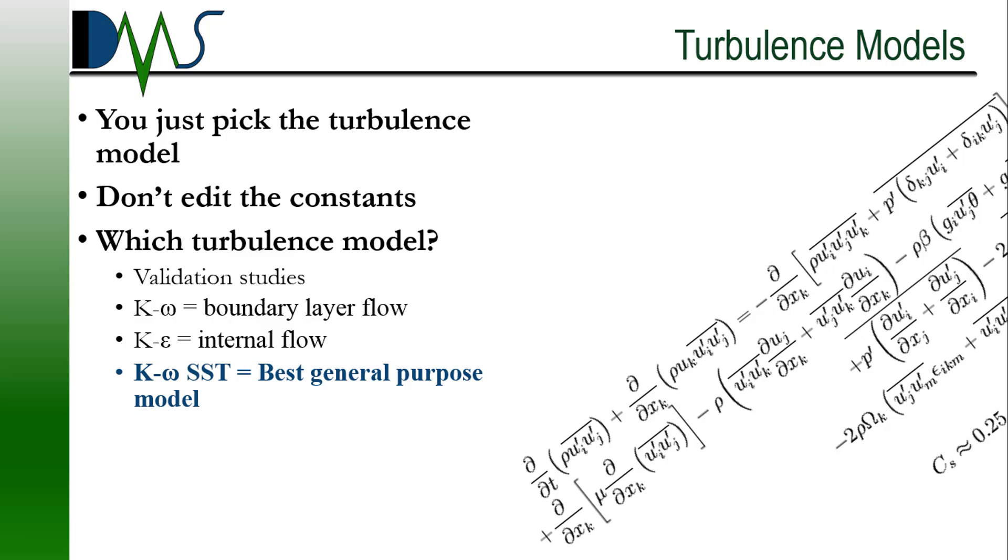But for some general information, the K omega model works very well for boundary layer flow. That was developed for things like wing flow over aerofoils. It's excellent at predicting separation from aerofoils. The K epsilon model, that's excellent for internal flow. Things like pipes, that's where that is the strongest.